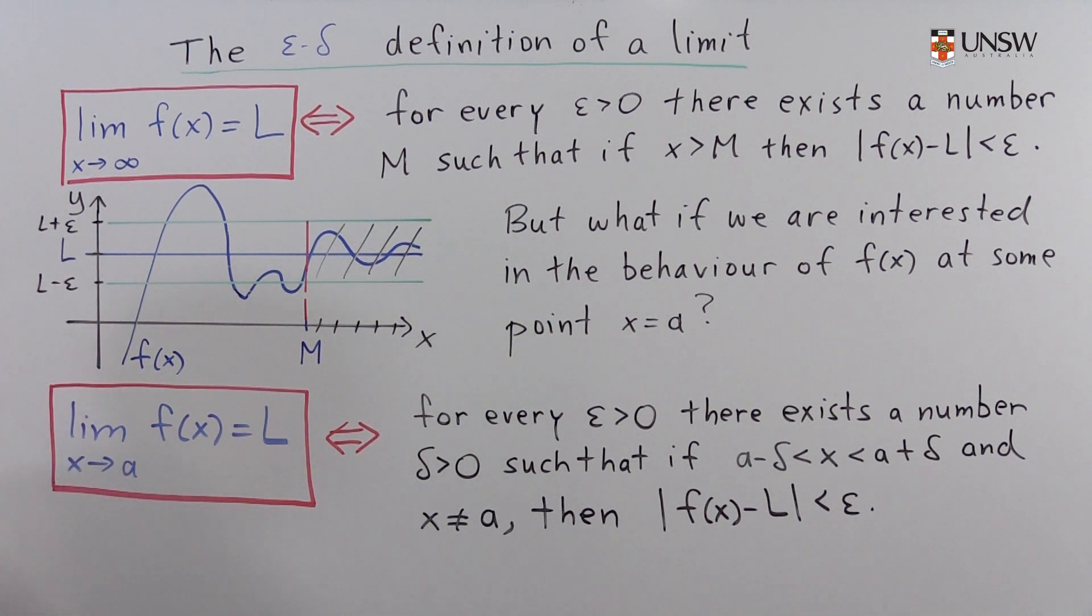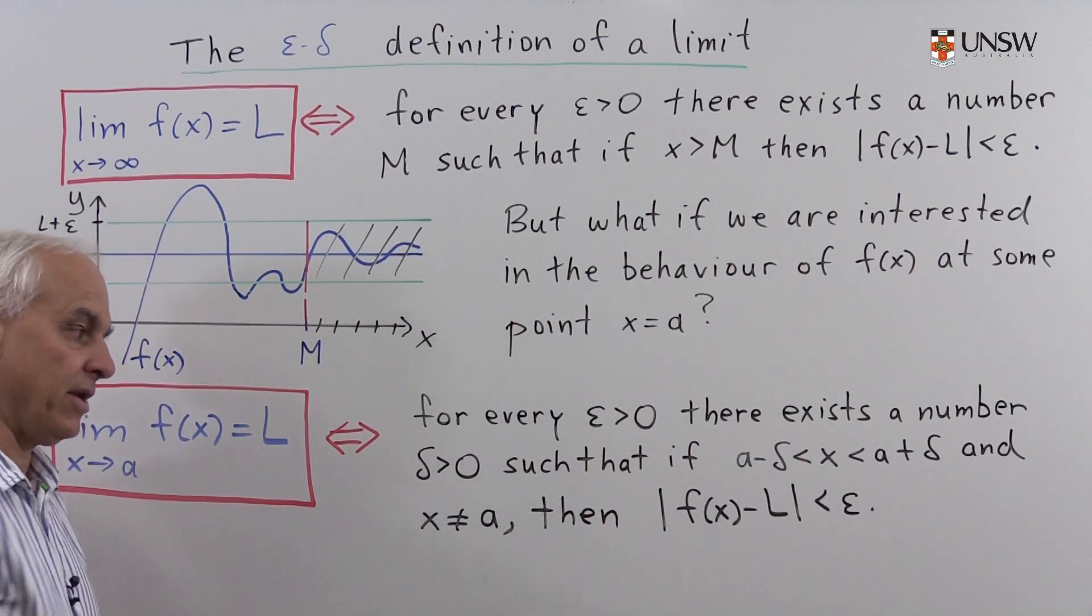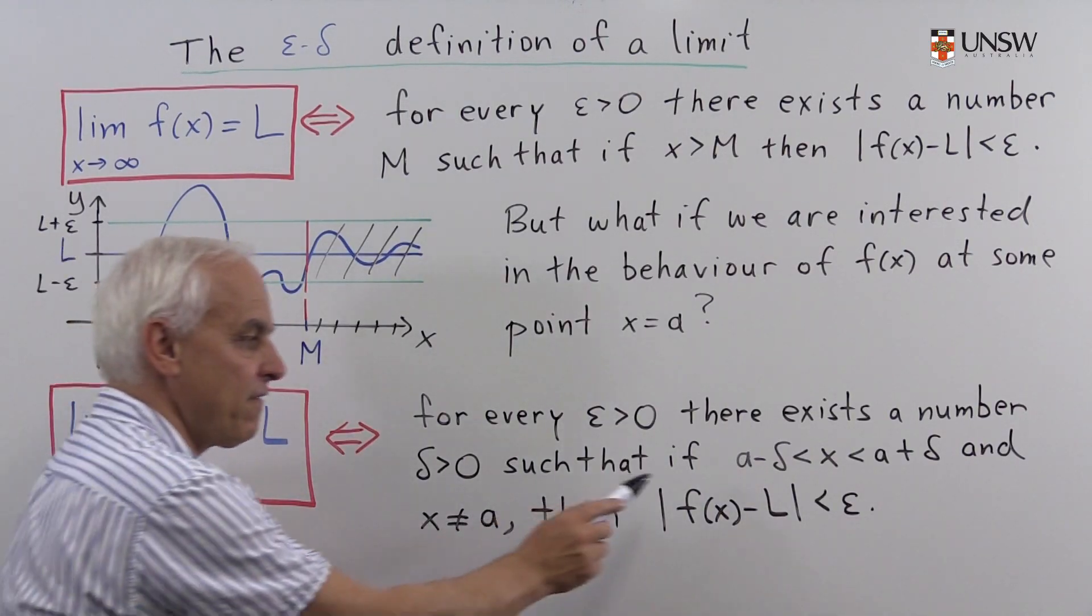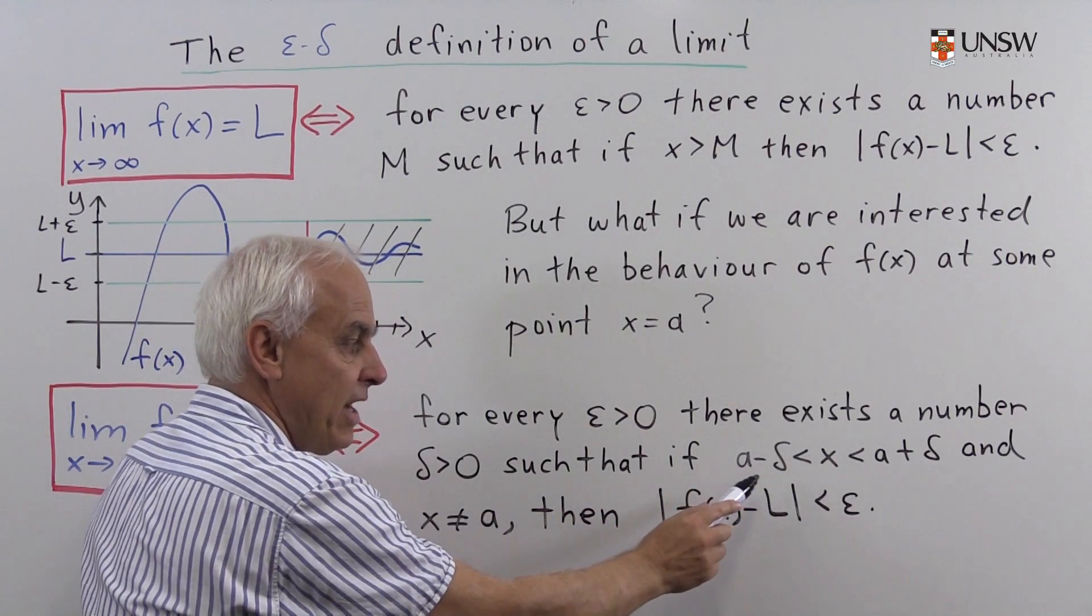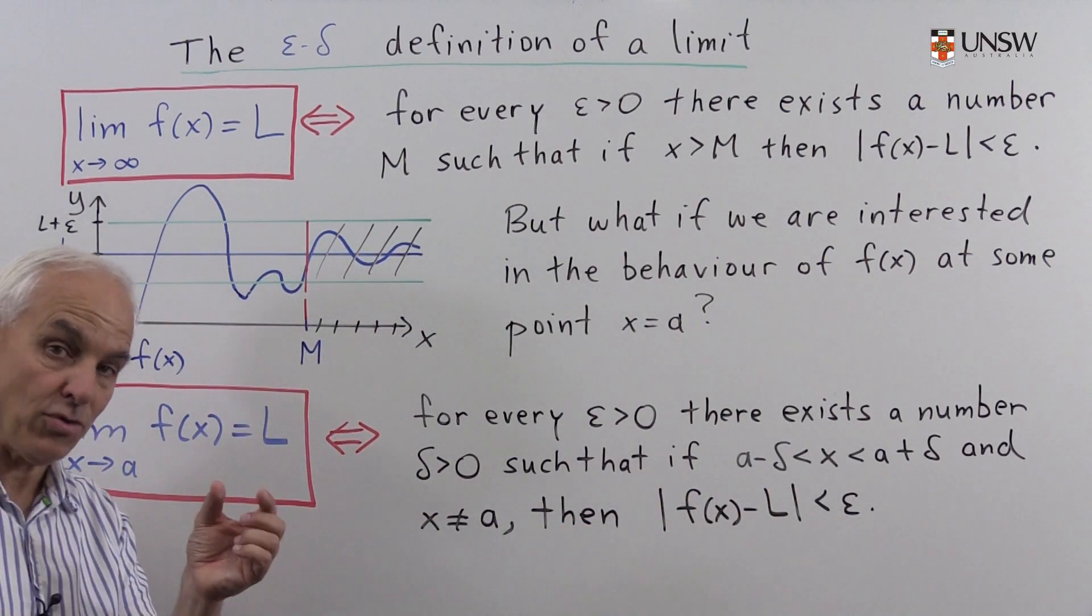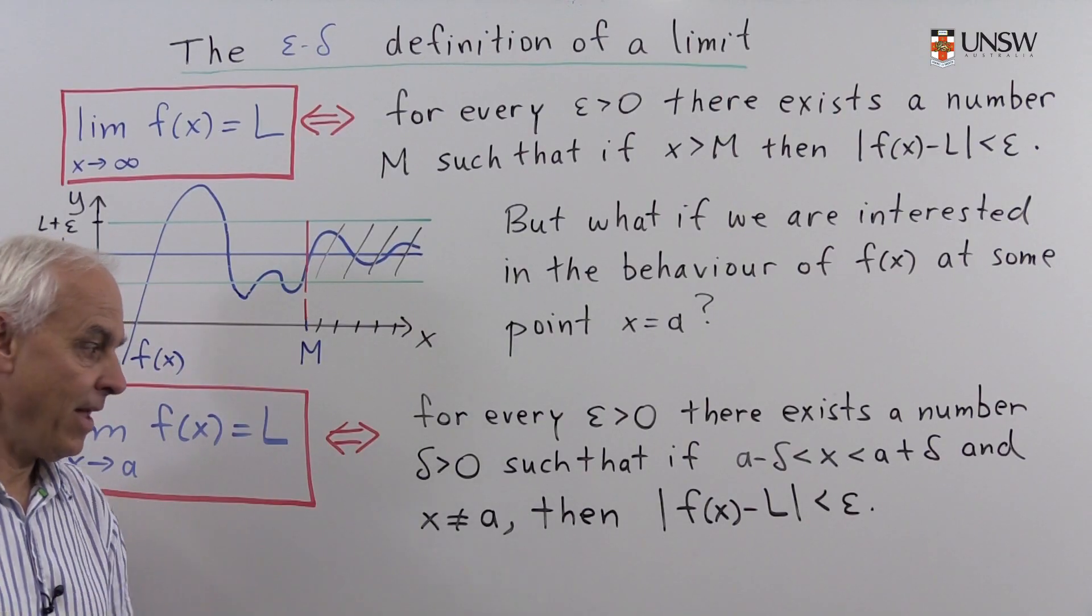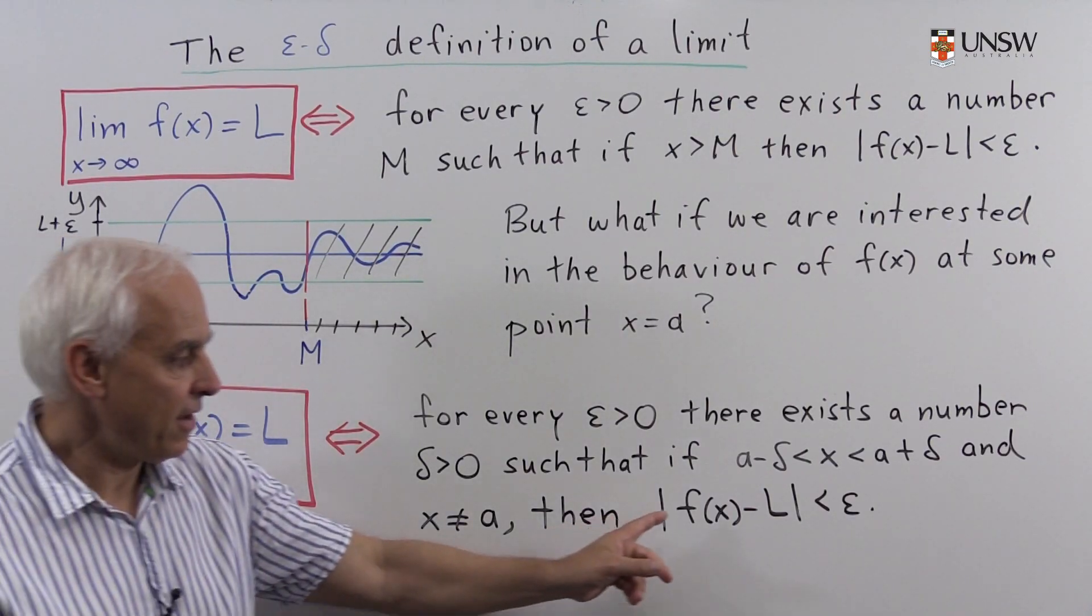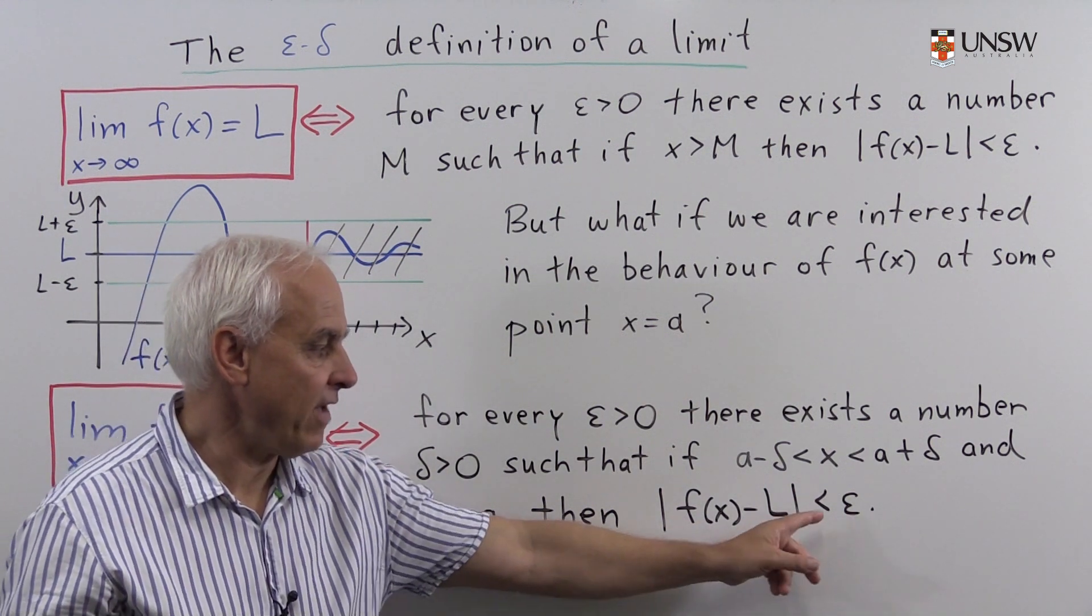Let's have a look at what it says. The limit as x approaches A of f of x equals L means that for every epsilon greater than 0, there exists a number delta greater than 0, typically a small number, such that if x is between A minus delta and A plus delta, in other words close to A, and x happens not to equal A, then f of x minus L in absolute value is less than epsilon.